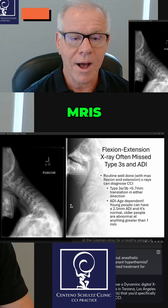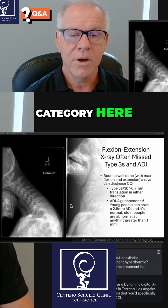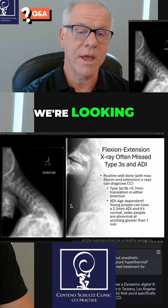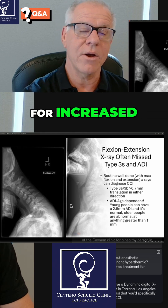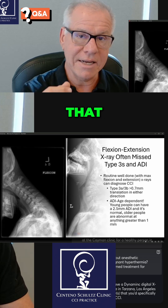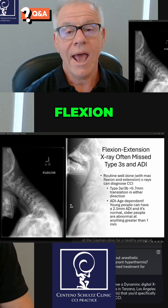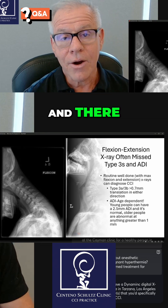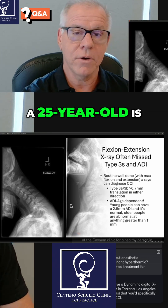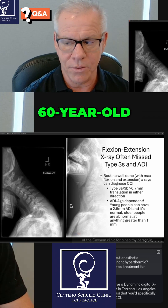In flexion-extension MRIs, we're looking for translation or movement at C2-3 and for increased ADI — the distance between the dens and the atlas when you go into flexion. That measurement is age-dependent, so the normal value for a 25-year-old is totally different than the normal for a 60-year-old.